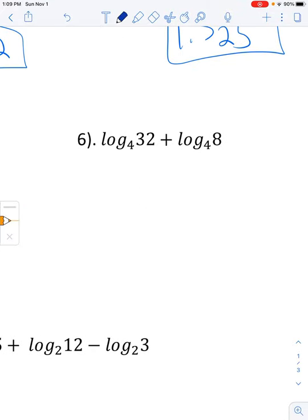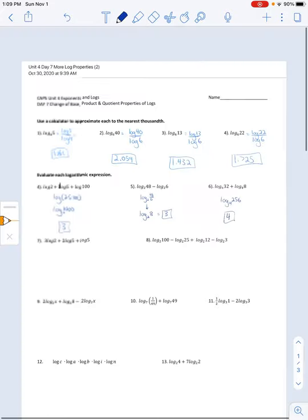So again, here we can multiply 32 times 8. 32 times 8 would be, let's see, 240, 256. How do we get from 4 to 256? So 4, 16, 64, and then 256 would be to the power of 4. So 4 is our answer.